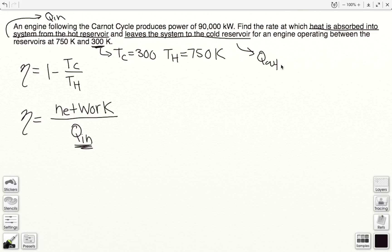And the heat that leaves the system to the cold reservoir is our Q_out. So remember, back to our PV diagram. There are four points.